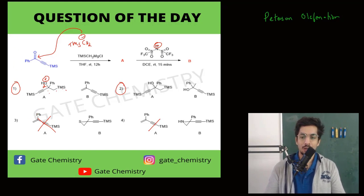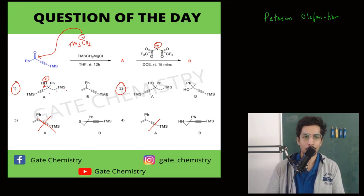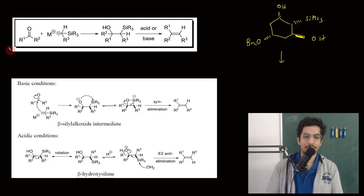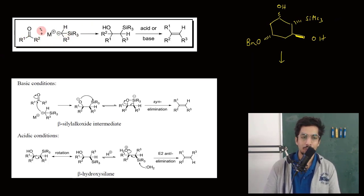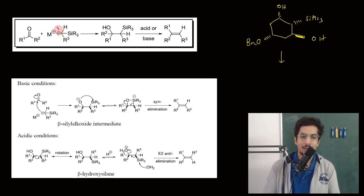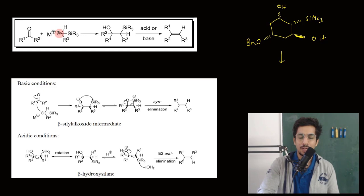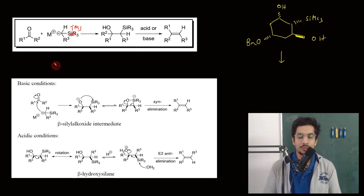Let's understand Peterson olefination more before returning to the question. We have a silyl carbanion attacking a ketone's carbonyl carbon — just like the Grignard reagent step — forming an alcohol intermediate with a TMS group on the adjacent carbon. Then, depending on whether acidic or basic conditions are applied, an elimination reaction takes place.